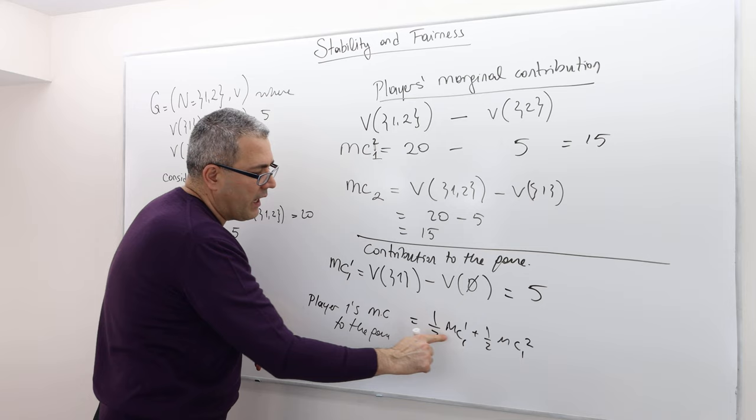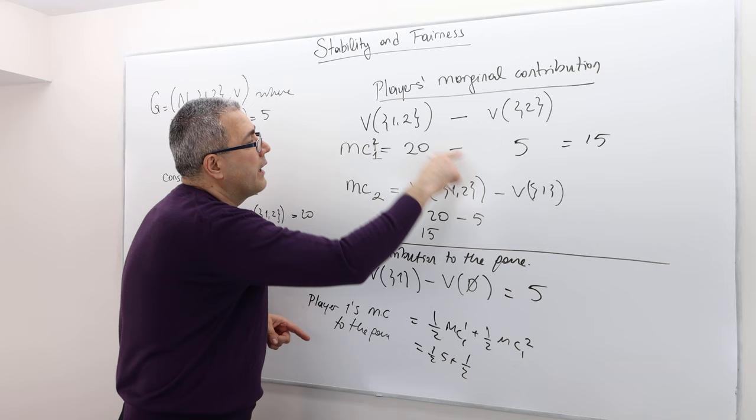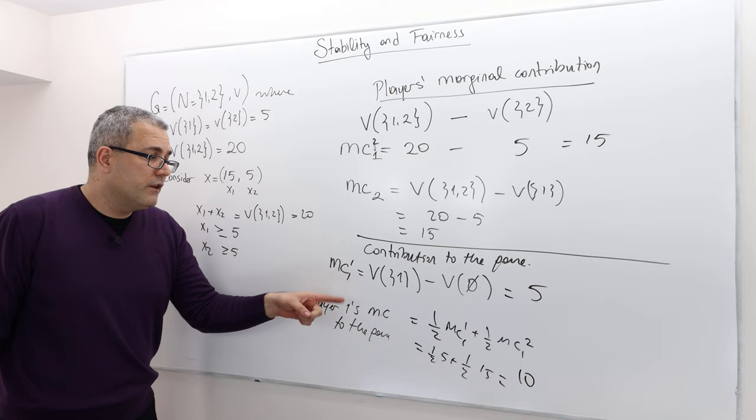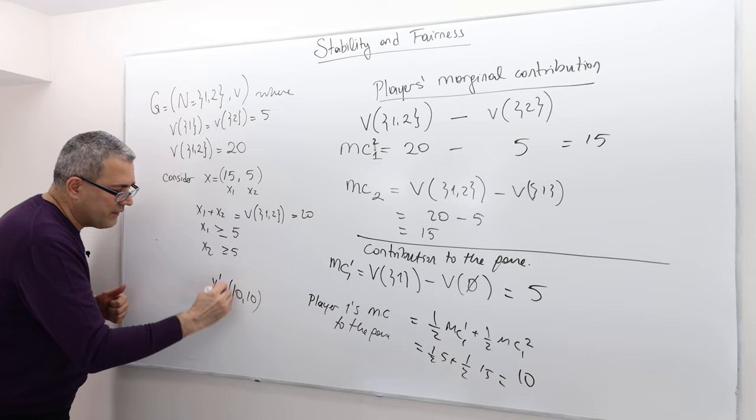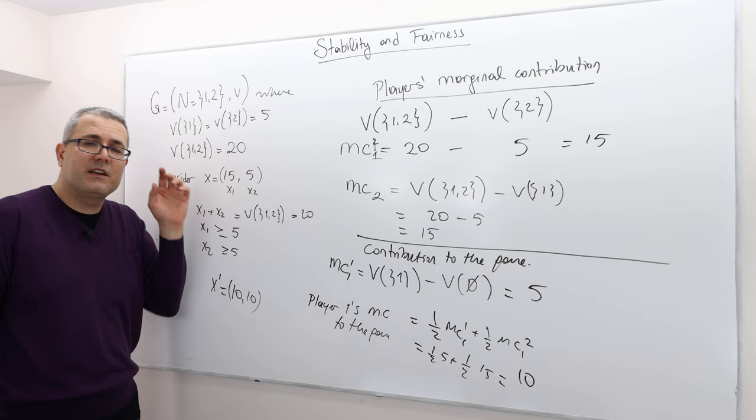So if you calculate this, it's going to be 10. If you do exactly the same thing, player 2's marginal contribution to the game, it's also 10. And remember, X prime, 10, 10, this is a stable outcome. And that's also pretty fair because the players are pretty symmetric in this game.